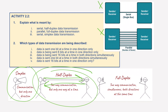And finally, we have full-duplex, for example using your mobile phones. Two-way communication is simultaneous — data can be sent in both directions at the same time. An advantage is there are no delays in communication, as both can send and receive data simultaneously.